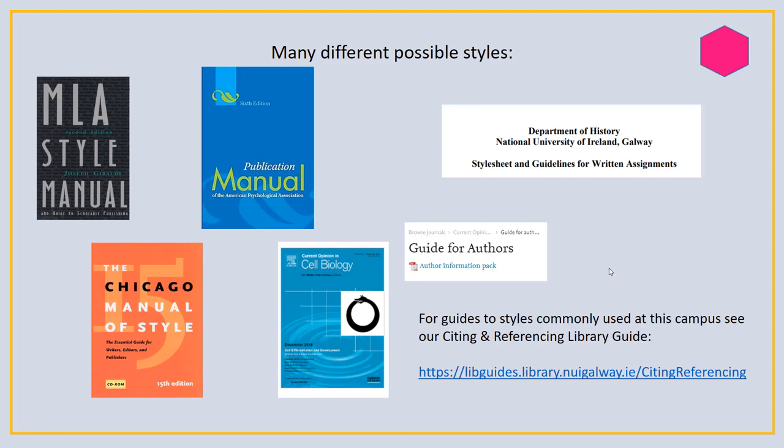Each style has its own guide — for example, there's the MLA style guide, the APA style guide, and the Chicago style guide. MLA is used principally in the humanities. APA is from the American Psychological Association, so it's for psychologists but also some other related disciplines, and historians tend to use Chicago. There are some departments on campus that use their own in-house guides; history would be one example of that.